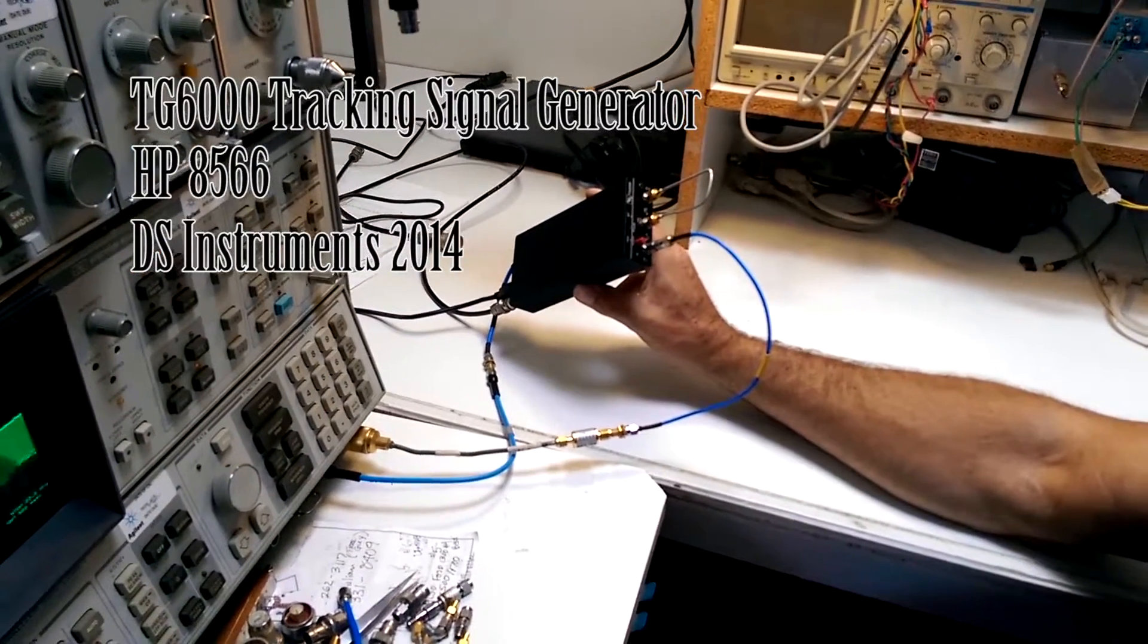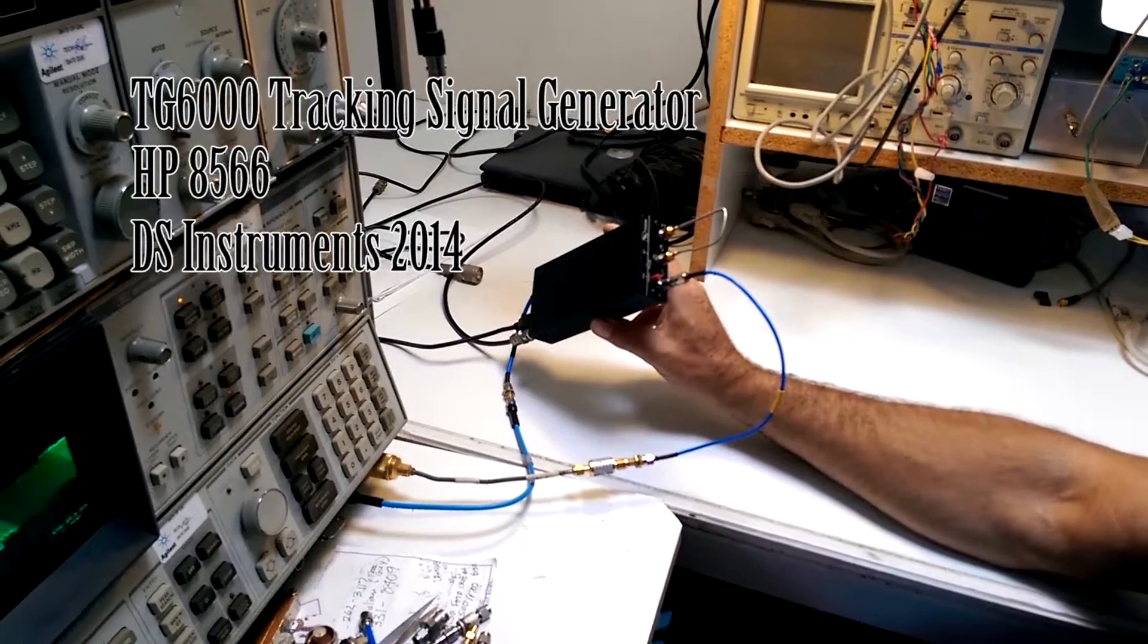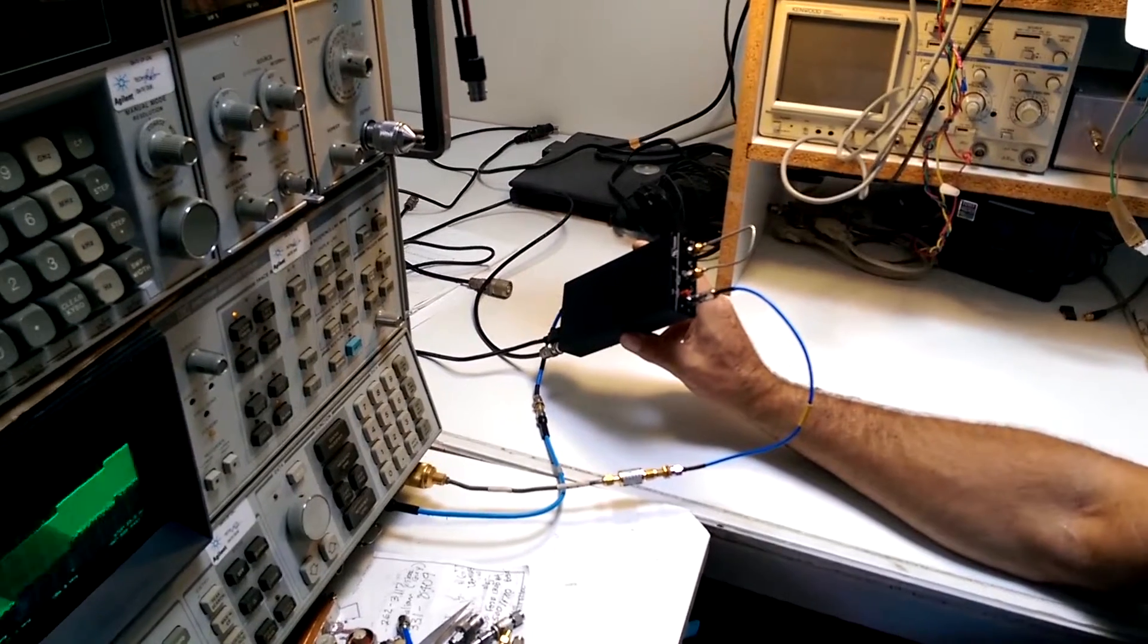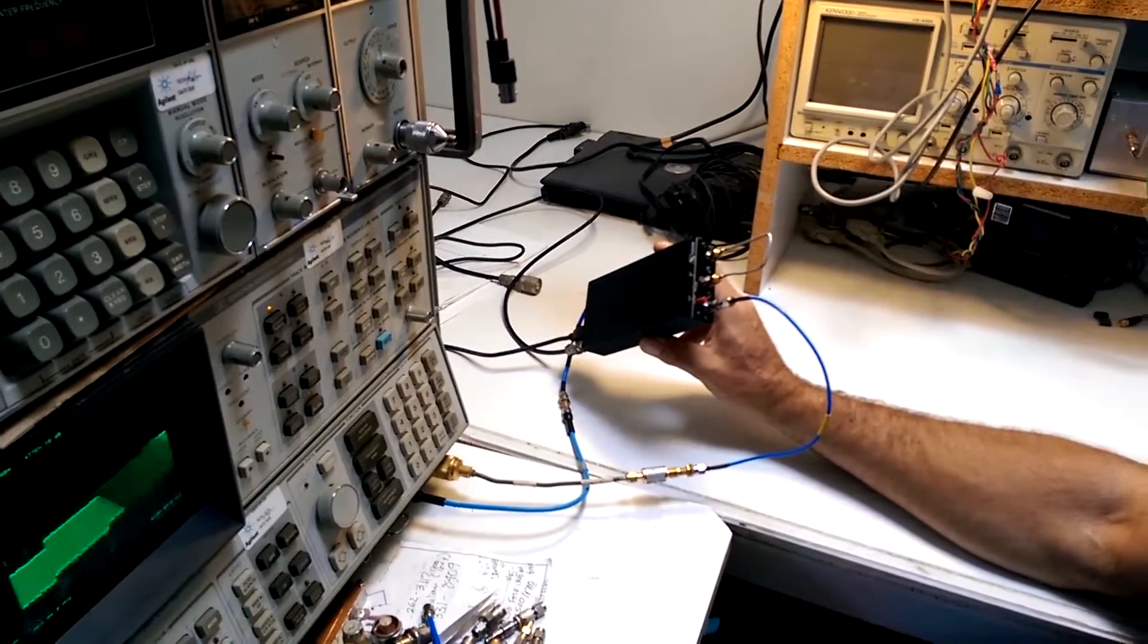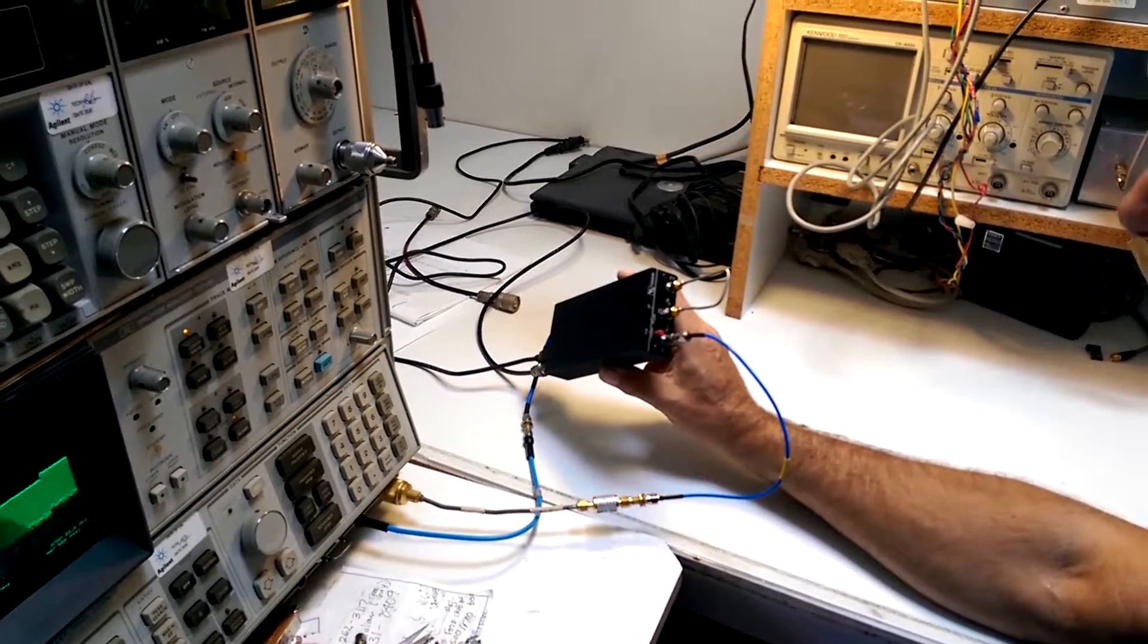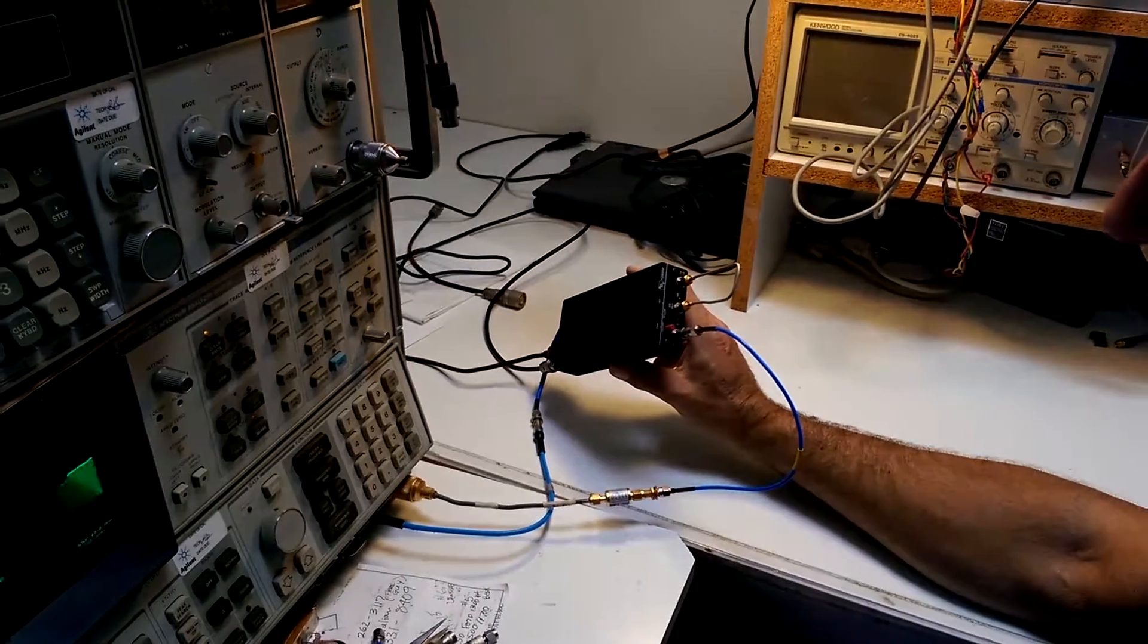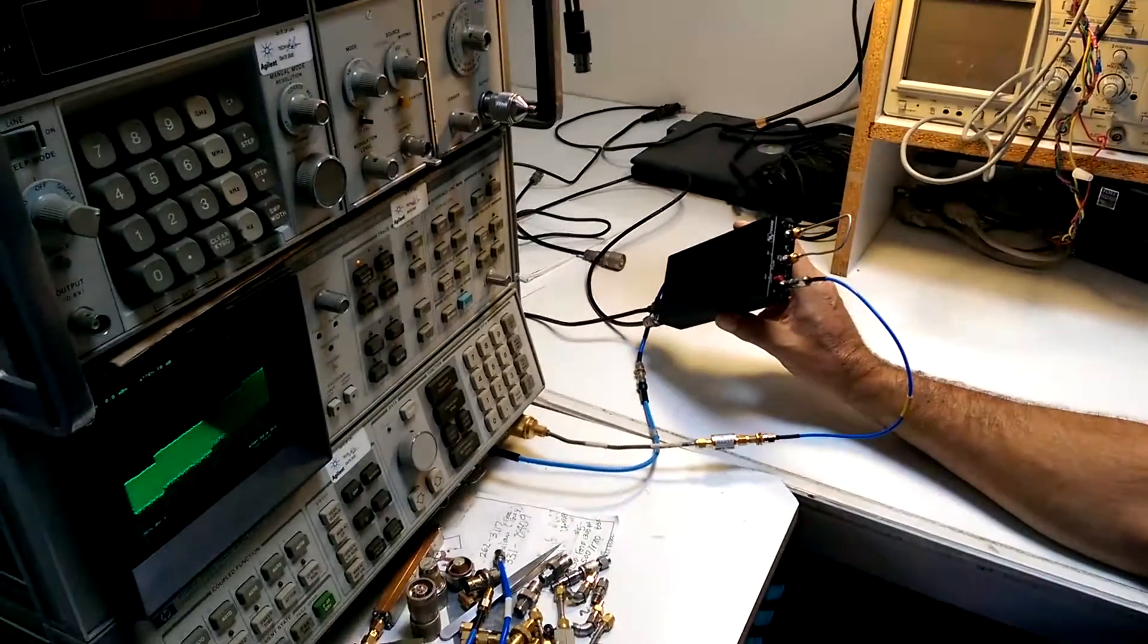Today we're going to set up the TG6000 for swept signal generation tracking generator using the 8566 spectrum analyzer from Hewlett Packard. This is the TG6000. It's been configured for sweeping the high band of the 8566 which goes from 2 to 5.8 GHz.